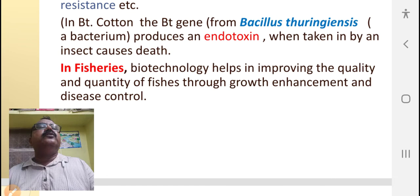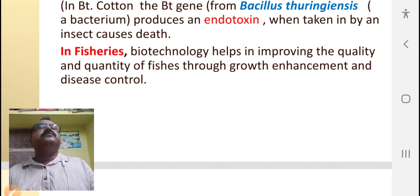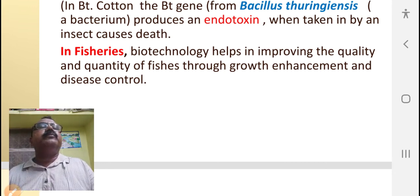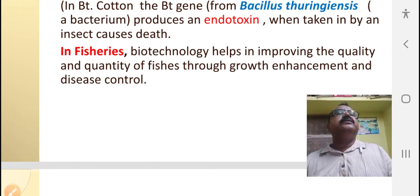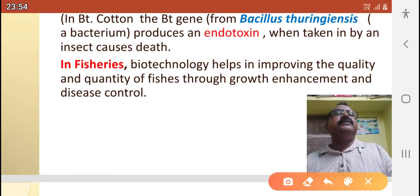The Bt gene produces an endotoxin; when this endotoxin is taken by the insect, it causes the death of the insect. Thus, the Bt cotton — the genetically modified cotton plant which is developed — is able to survive from the attack of pests. In fisheries, biotechnology helps in improving the quality and quantity of fishes through growth enhancement and disease control. Diseases and pests are now controlled so that plenty of fishes are available in the market.